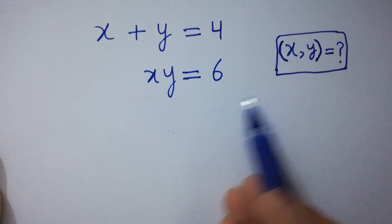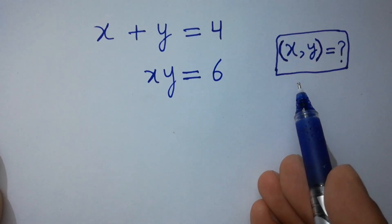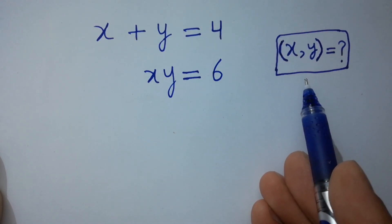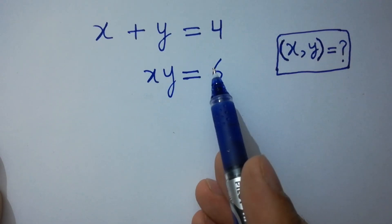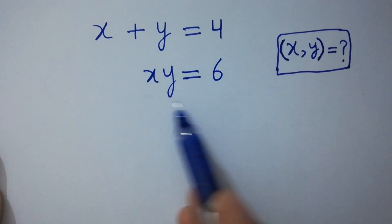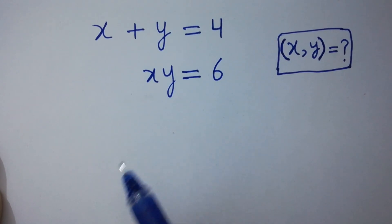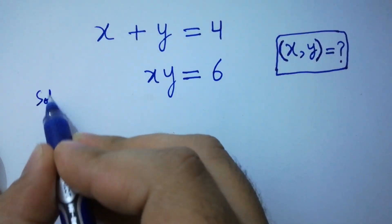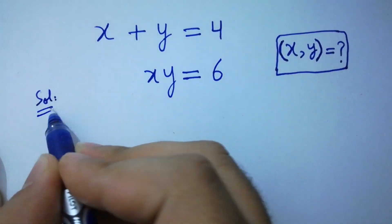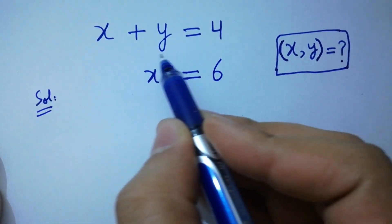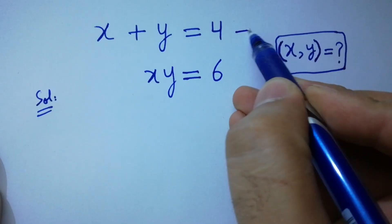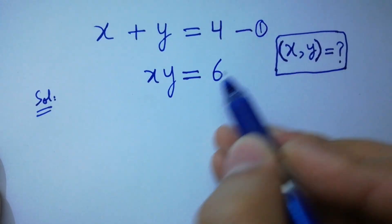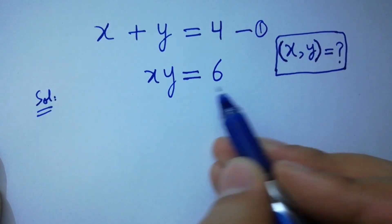Hello friends. Find the value of x and y if x plus y equals 4 and xy equals 6. Let x plus y equal to 4 be the first equation, and xy equal to 6 be the second equation.